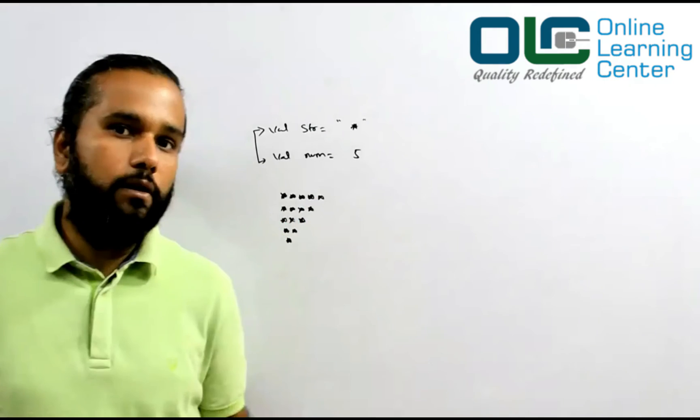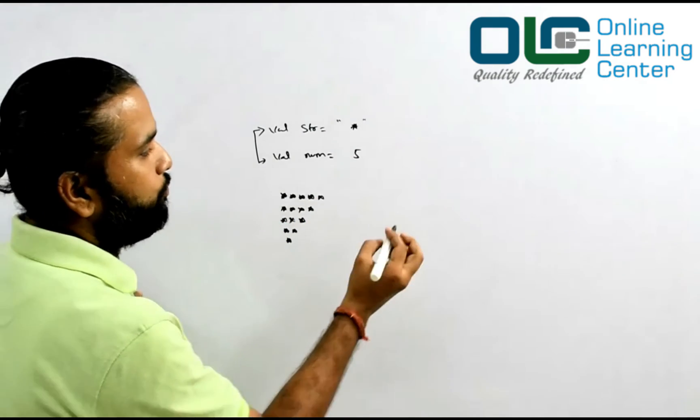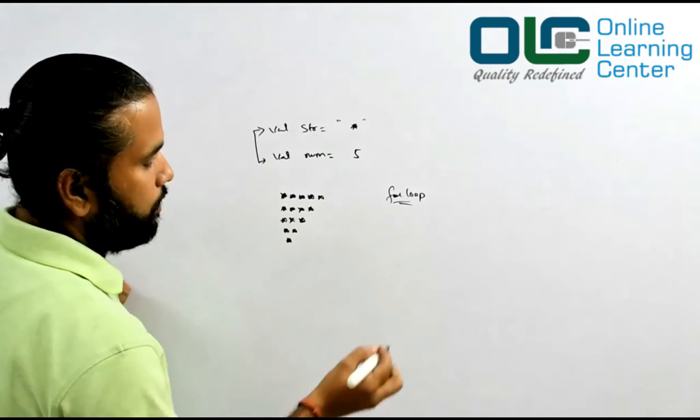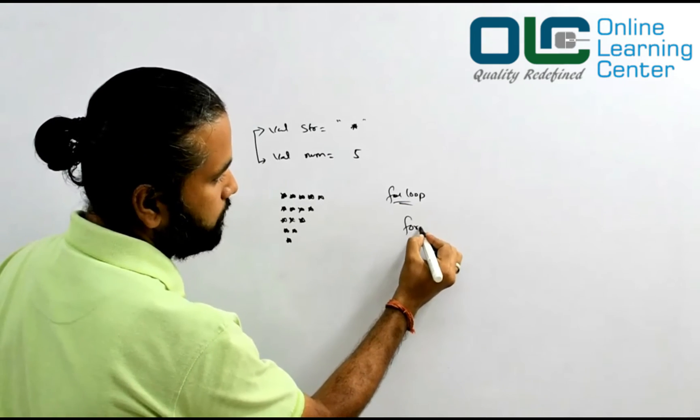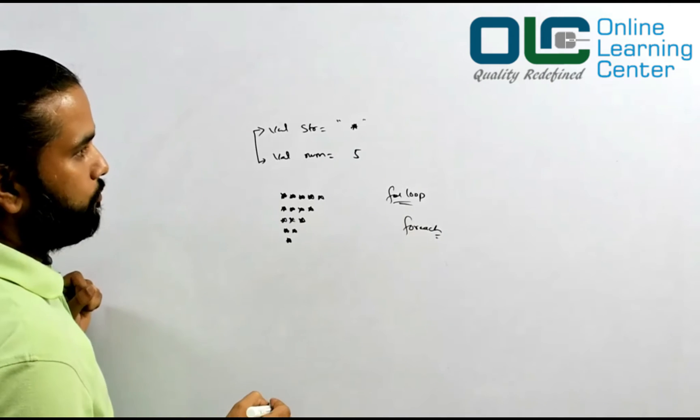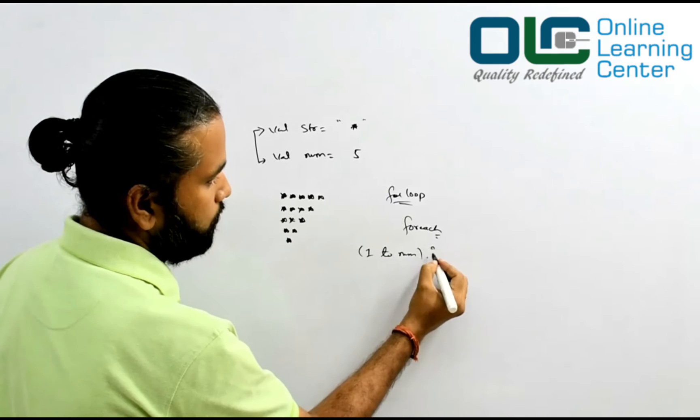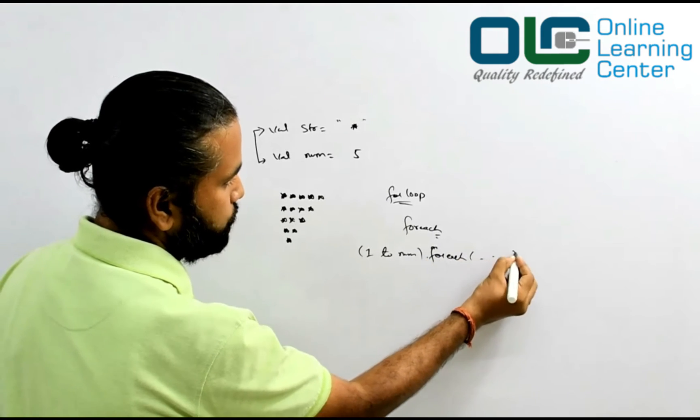Now, what I don't want you to do is use a for loop. Don't use your traditional for loop. You can of course use forEach, no worries, but that does not mean you're going to use forEach like num.forEach - you are not supposed to do it this way.